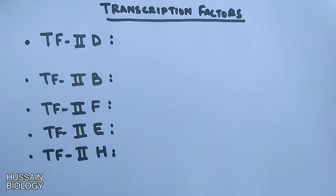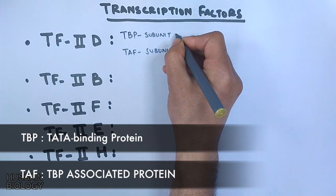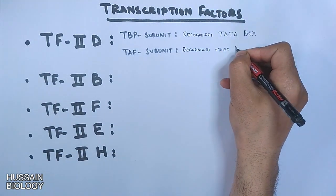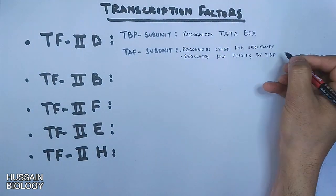Transcription factor 2D has got 2 different subunits: TBP subunit and TAF subunit. The TBP subunit recognizes TATA box, while the TAF subunit recognizes other DNA sequences and also regulates DNA binding by TBP.